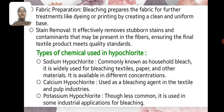Calcium Hypochlorite: Used as a bleaching agent in the textile and pulp industry. Potassium Hypochlorite: Though less common, it is used in some industrial applications for bleaching.